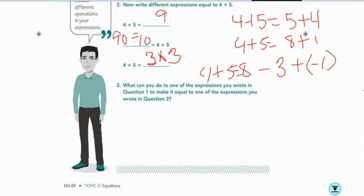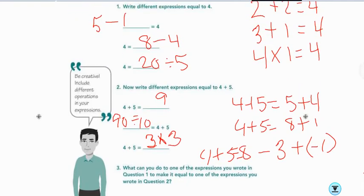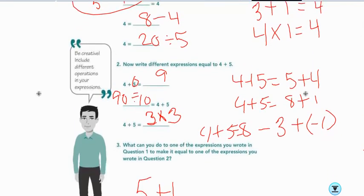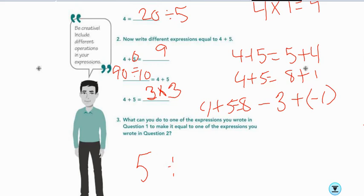So what can you do for one of the expressions you wrote in equation 1 to make it equal to one of the expressions you wrote in equation 2? So the top one, I have 5. I'm saying, let's use this one. I have 5 minus 1. And so that's going to be equal to 4. So in these other ones, it's just plus 5. So if I take this plus 5, it'll be equal to any of these that are in here. So I could say 3 times 3.